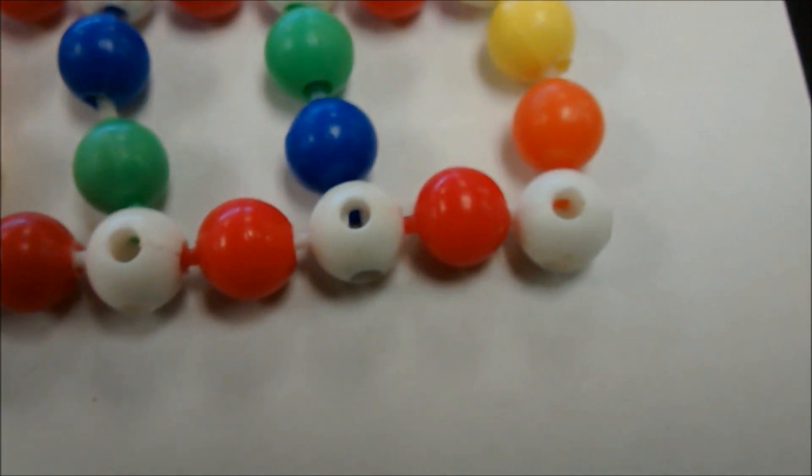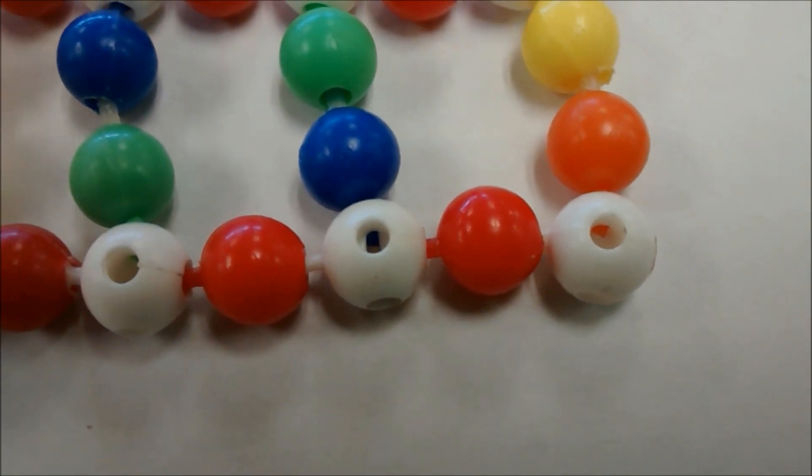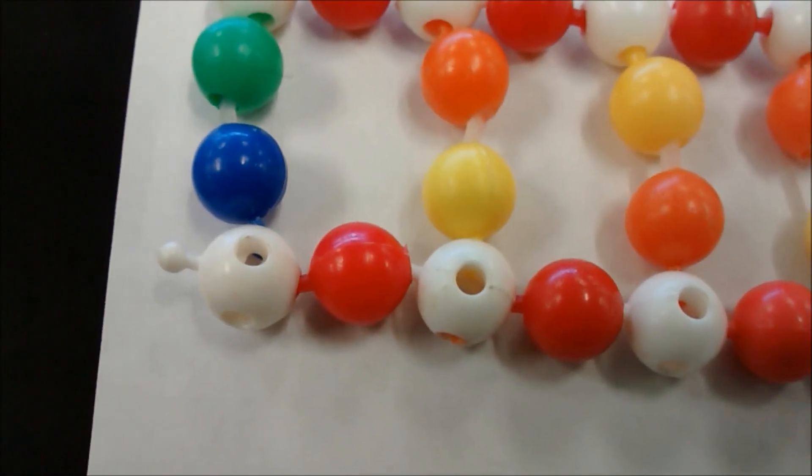And then this side, you can see that there's a five prime up. So the little dent is up and the knob is down. So this goes five prime to three prime.